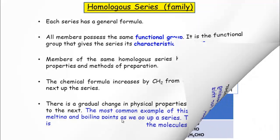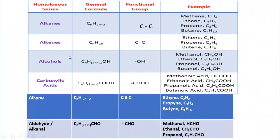Now follow the example — it will be more clear to you. For example, alkane. Alkane is a homologous series, and its common general formula is CₙH₂ₙ₊₂. This is the general formula of alkane, and its functional group is the carbon-carbon single bond. Now follow the example: methane, ethane, propane, butane, and more hydrocarbons of alkane — they are members of the alkane homologous series. So their homologous series name is alkane and they are the members, they are called homologs.